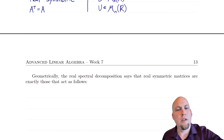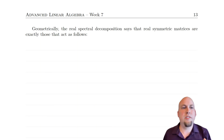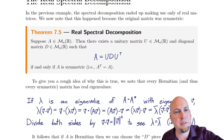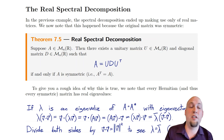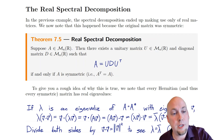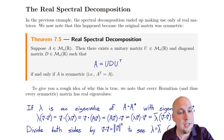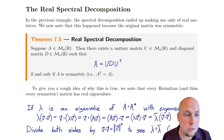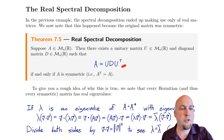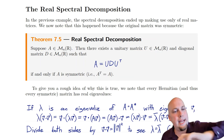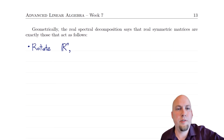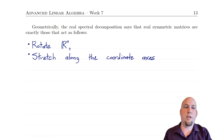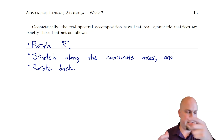Let's think about this geometrically. The real spectral decomposition tells us we can think of real symmetric matrices in a very nice geometric way. Every real symmetric matrix can be written as A = UDU transpose — a product of three matrices, i.e., a composition of three linear transformations. The first, U transpose, is a unitary matrix that just rotates and reflects space. Then D, a diagonal matrix, stretches along the coordinate axes. Then U, the inverse of U transpose, rotates or reflects back in the opposite way, undoing the original rotation.